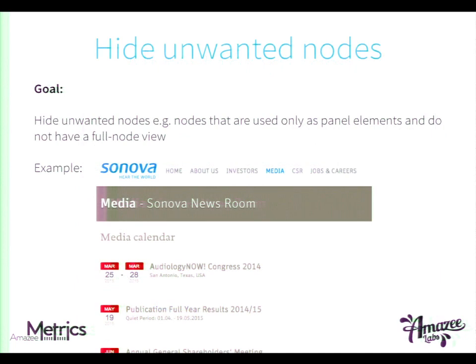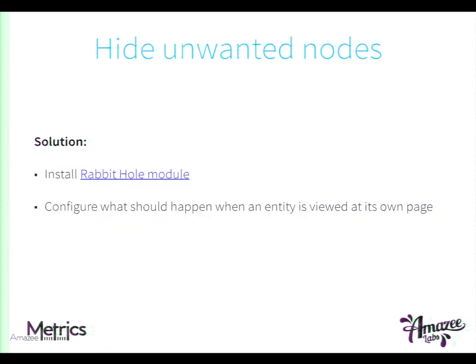It can happen that you have content types you would like to hide from search engines. In our case, we have some content types where we don't want to show the full node view. For example, events have so little information that they don't have a full node view — they appear only in a view mode. In this case, you want to hide the full node view from Google. Therefore, we use the Rabbit Hole module, where you can define what should happen when accessing the full node view — for example, redirect to the overview page.